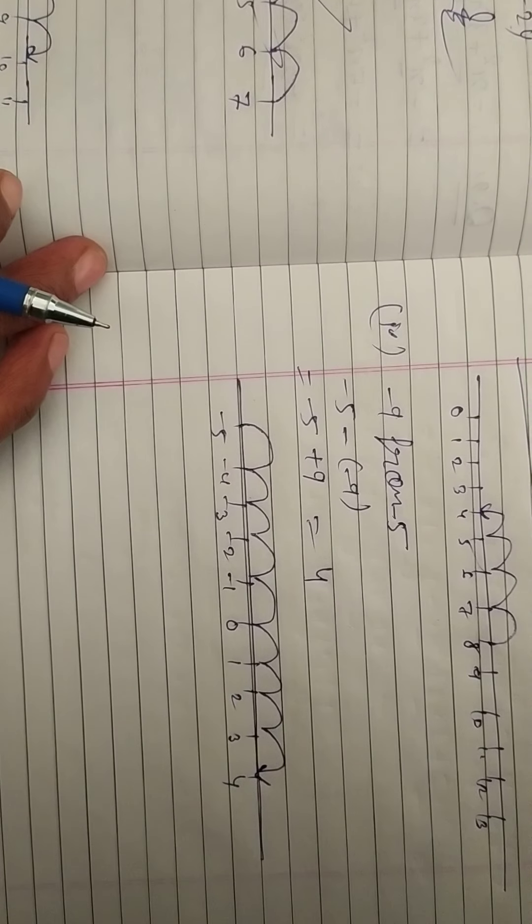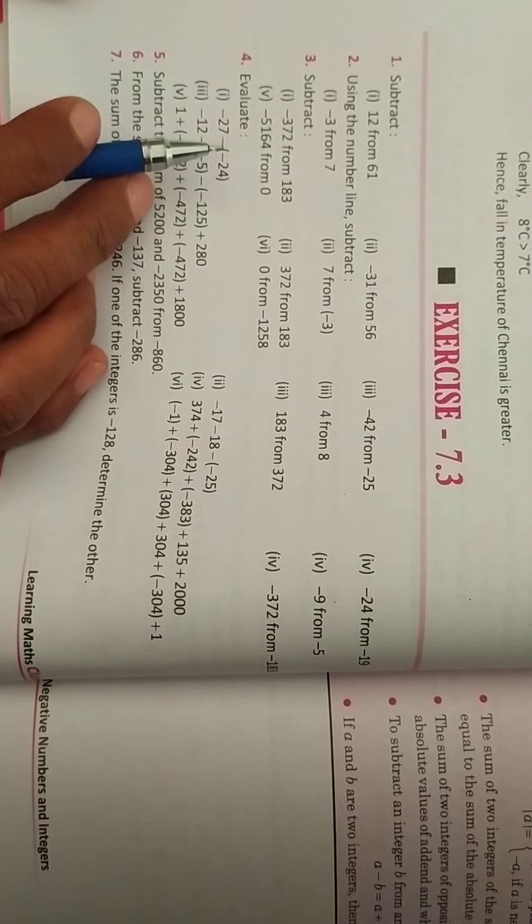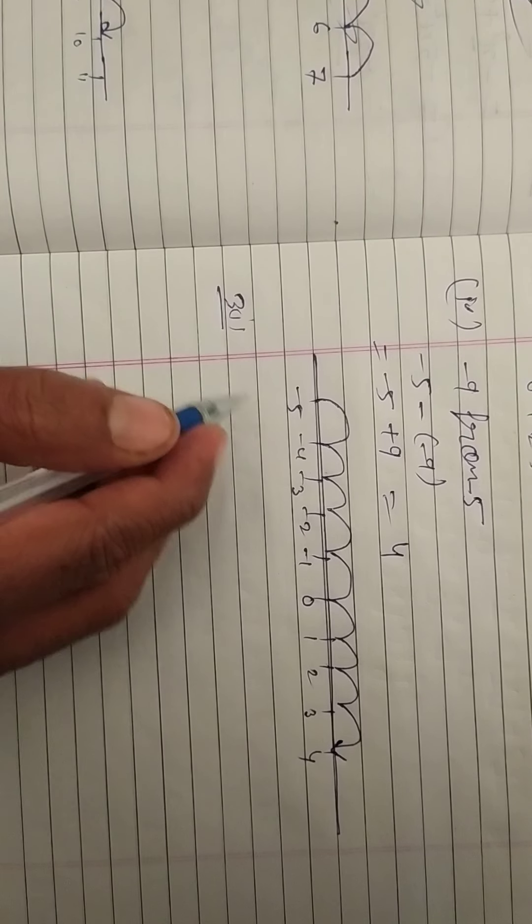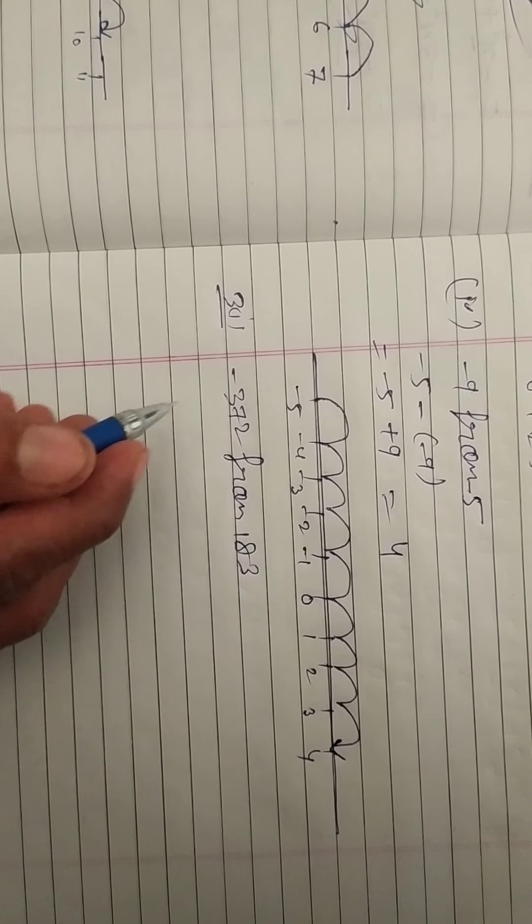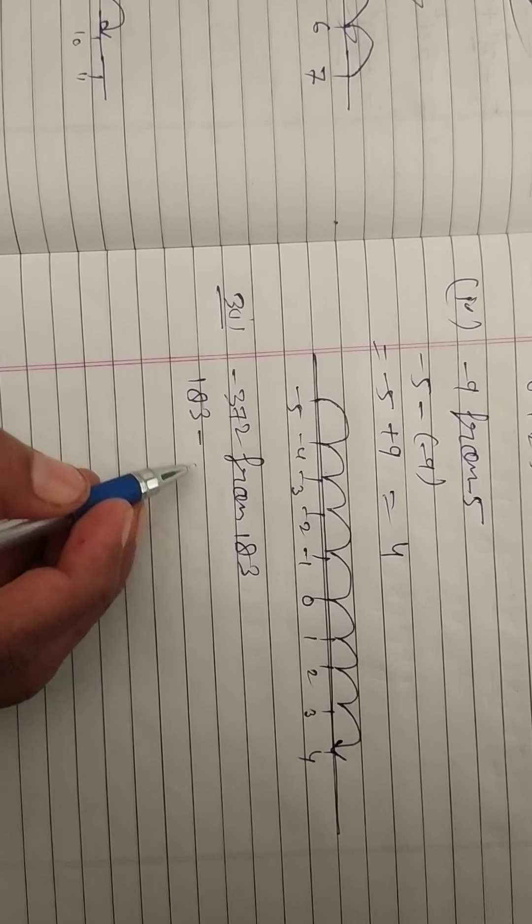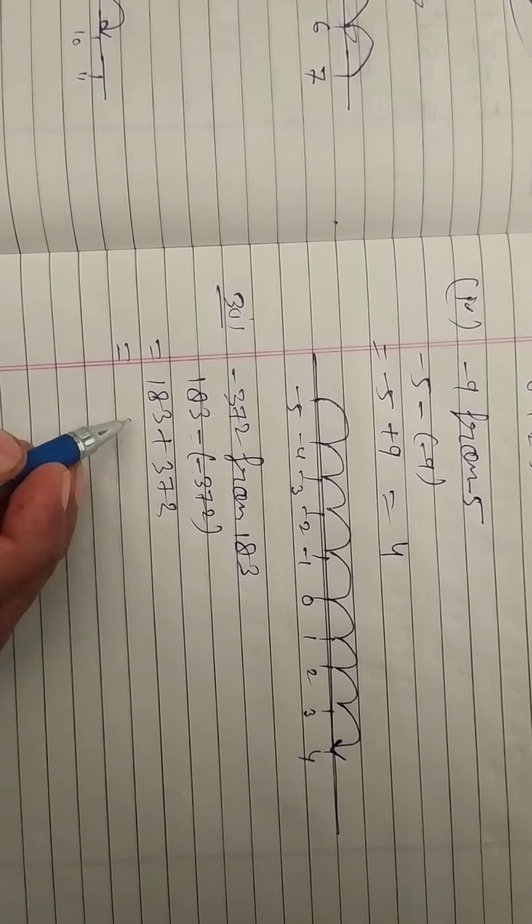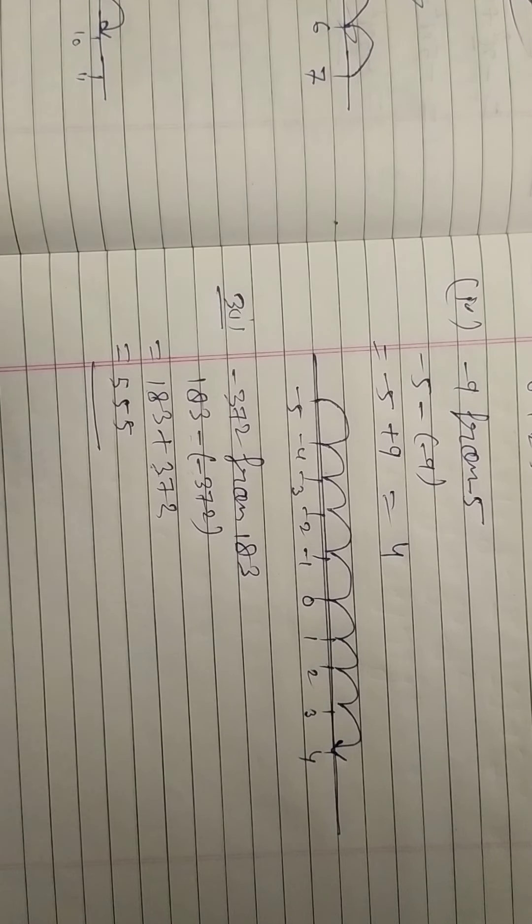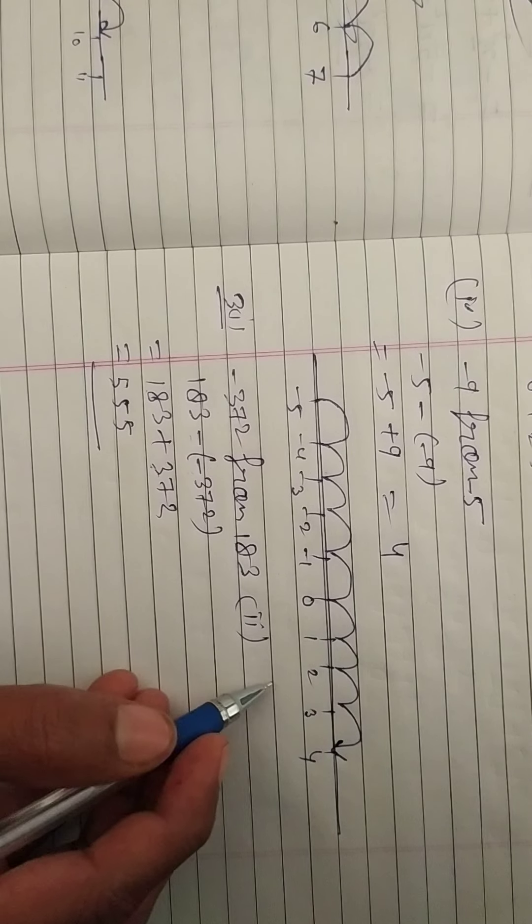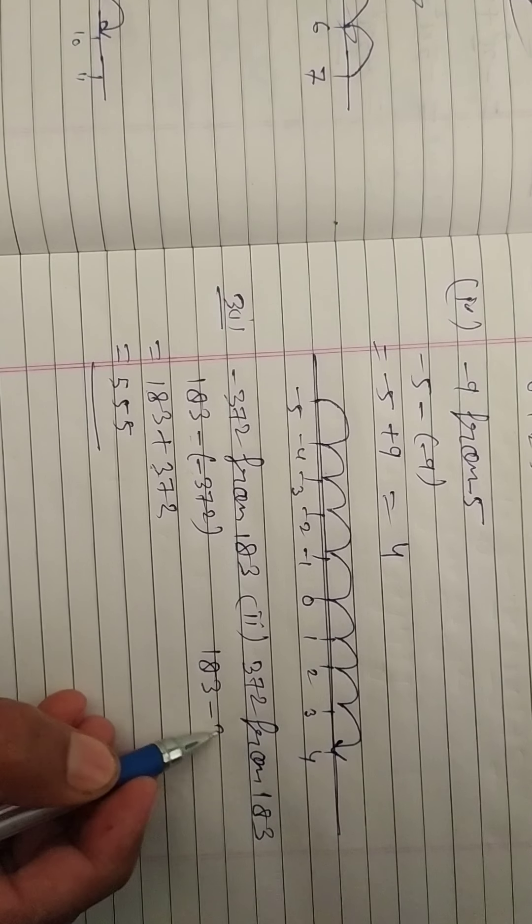Next question, question number 3, subtract. First, minus 372 from 183. We will subtract minus 372. Minus 372, minus minus plus 372 add 3 to 5, 555. Second, 372 from 183, 283, subtract 372.